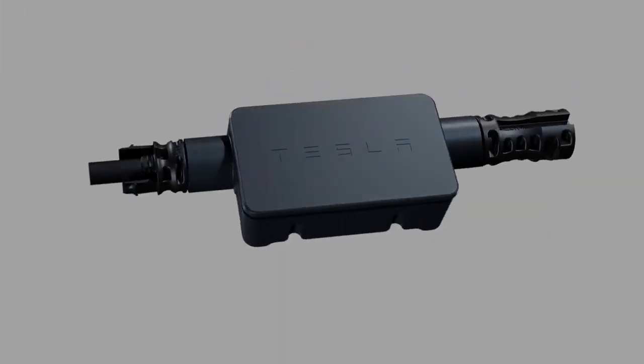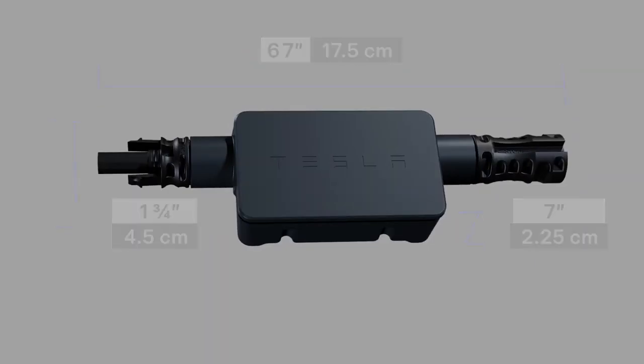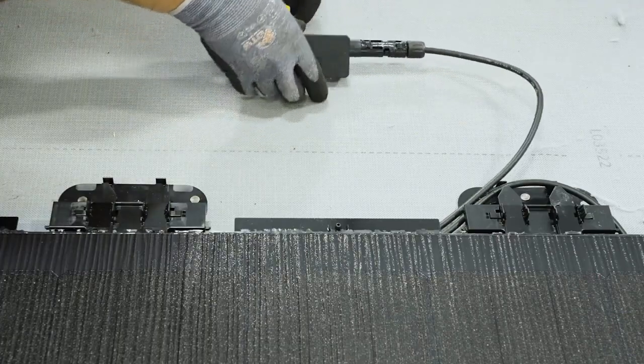Here is a closer look at the MCI and its dimensions. Integrated MC4 connectors are located on each end of the MCI, one positive and one negative. These are used to connect MCIs in line with solar modules during the installation of an array.